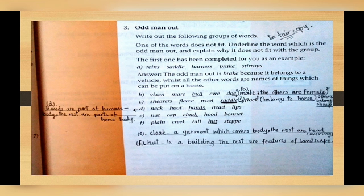D: neck, hooves, hands, head, lips. Underline hands because hands are part of human body and the rest are horse body. E: headcap, clock, hood, and bonnet. You will underline clock here because it is a garment which covers body and the rest are head coverings. F: plane, creek, hill, hut, steep or steepy.